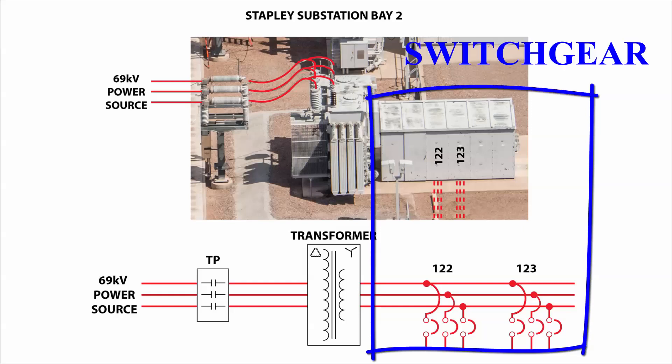Circuit breakers function just like circuit breakers at your house, interrupting and isolating electrical problems. Each circuit breaker delivers three-phase 12 kV power through cables which run underground out into the neighborhoods in the area of the substation.